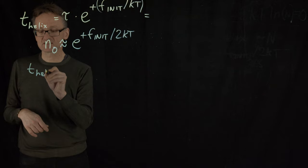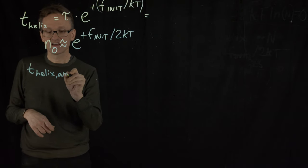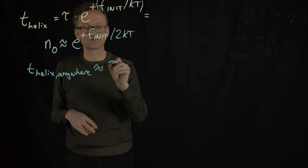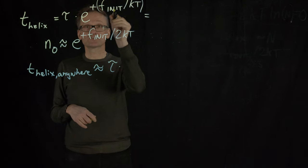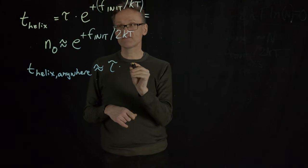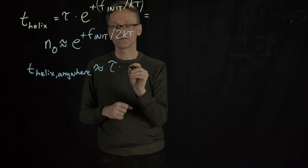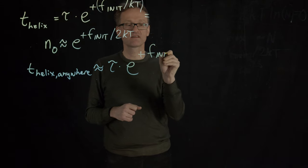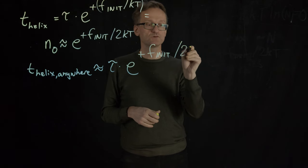So time for helix anywhere is roughly proportional to tau. Well, this is just going to be the logarithm, so I will have a factor of 2 in the numerator instead, e raised to plus f_init divided by 2kT.